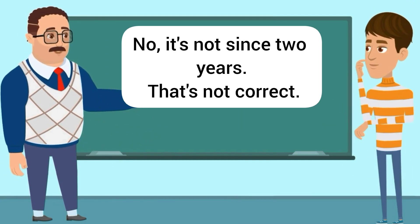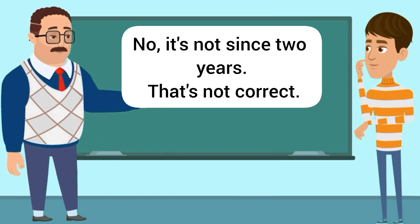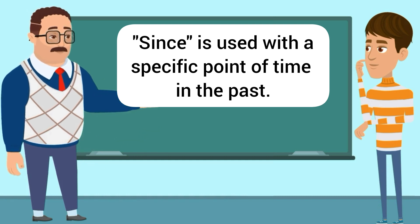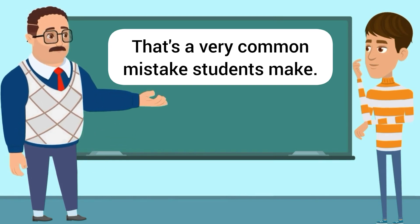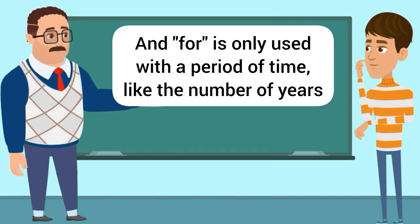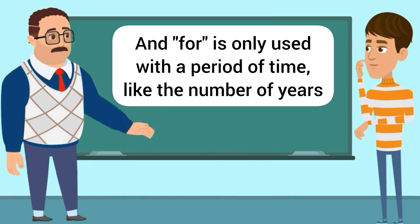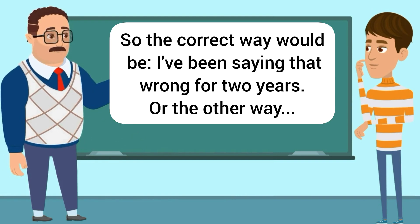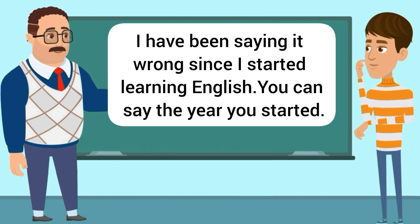No, it's not 'since two years.' That's not correct. 'Since' is used with a specific point of time in the past. That's a very common mistake students make. And 'for' is only used with a period of time, like the number of years. So the correct way would be: 'I've been saying that wrong for two years.' Or the other way: 'I have been saying it wrong since I started learning English.'